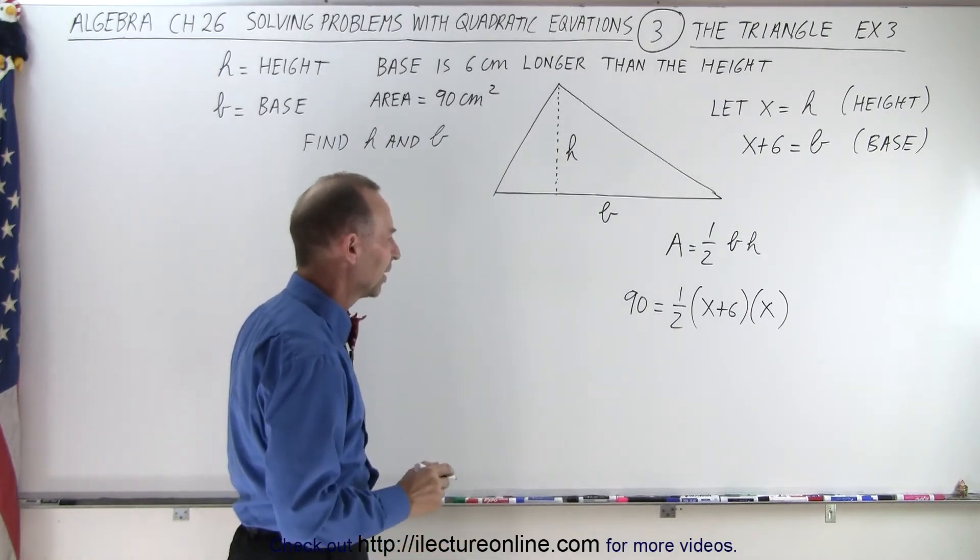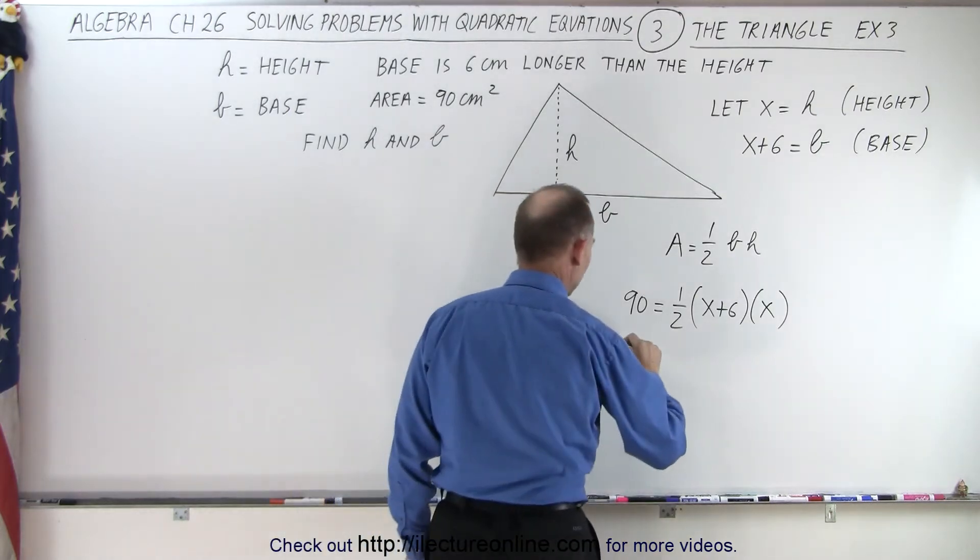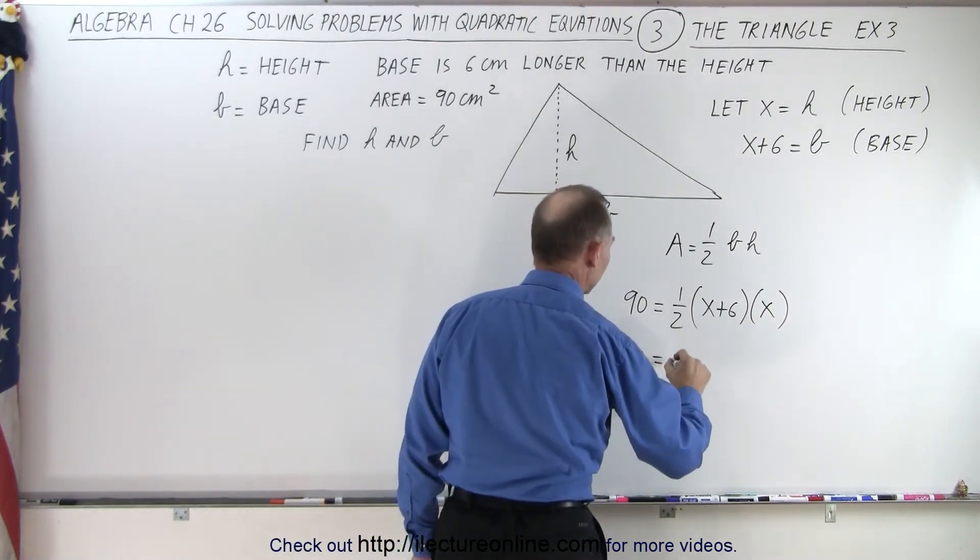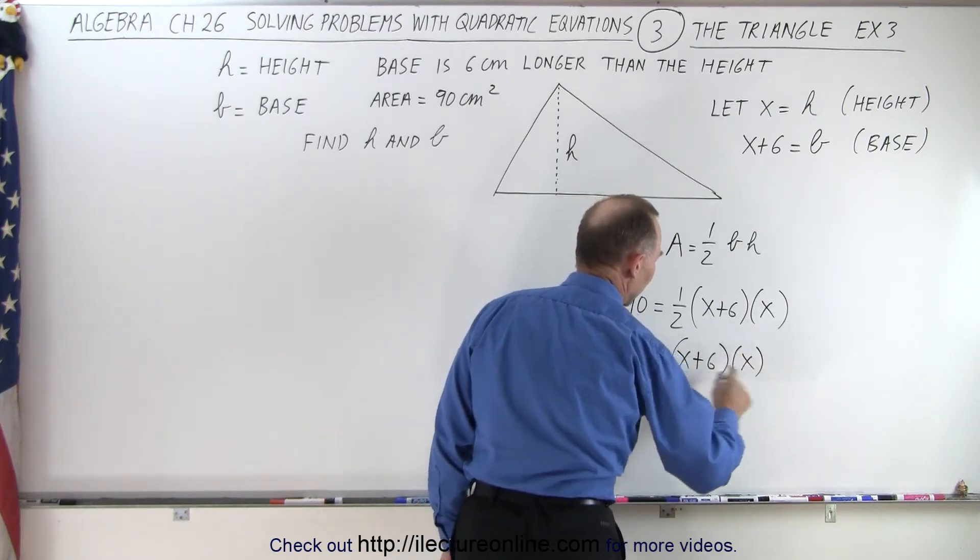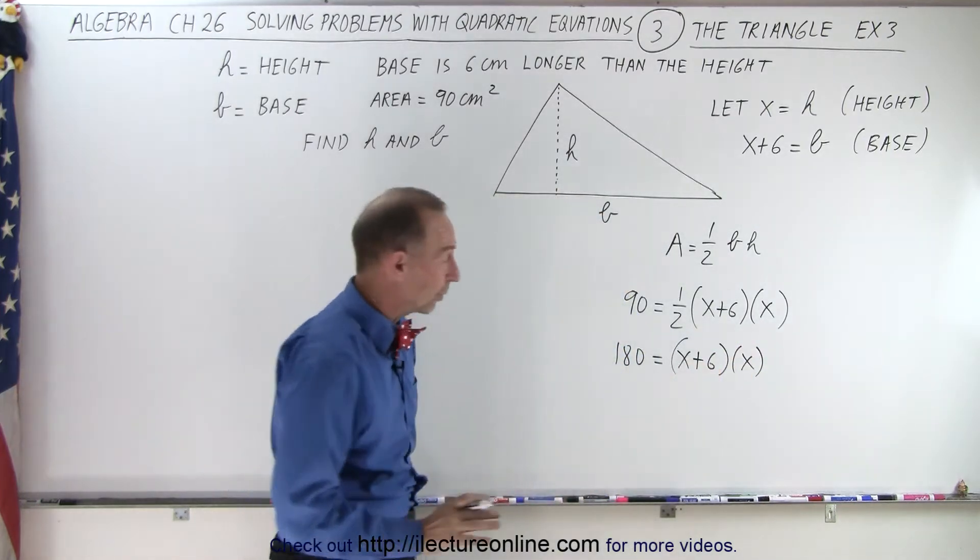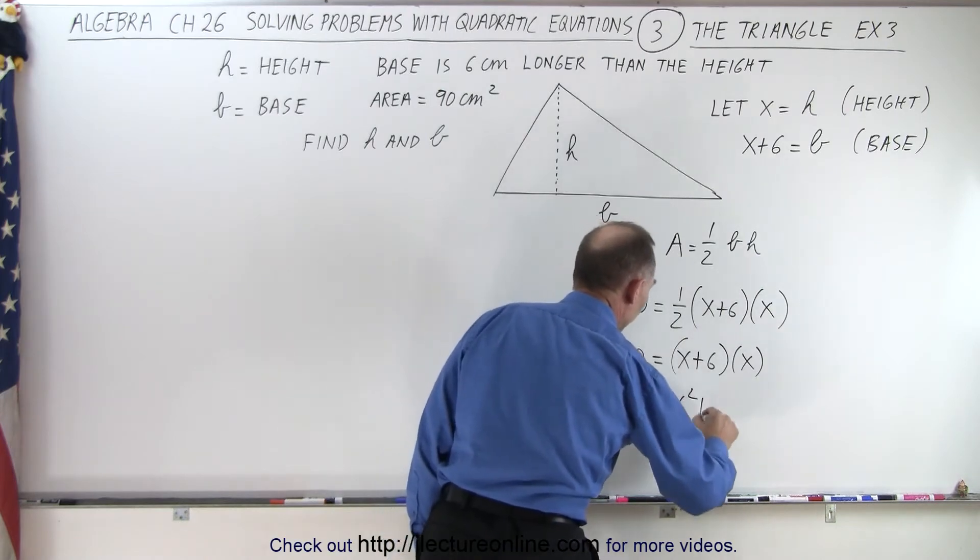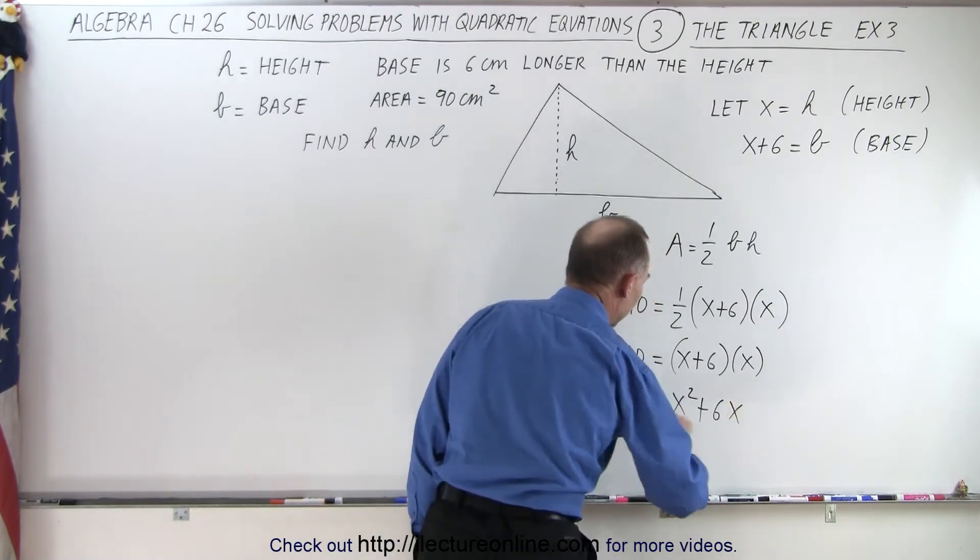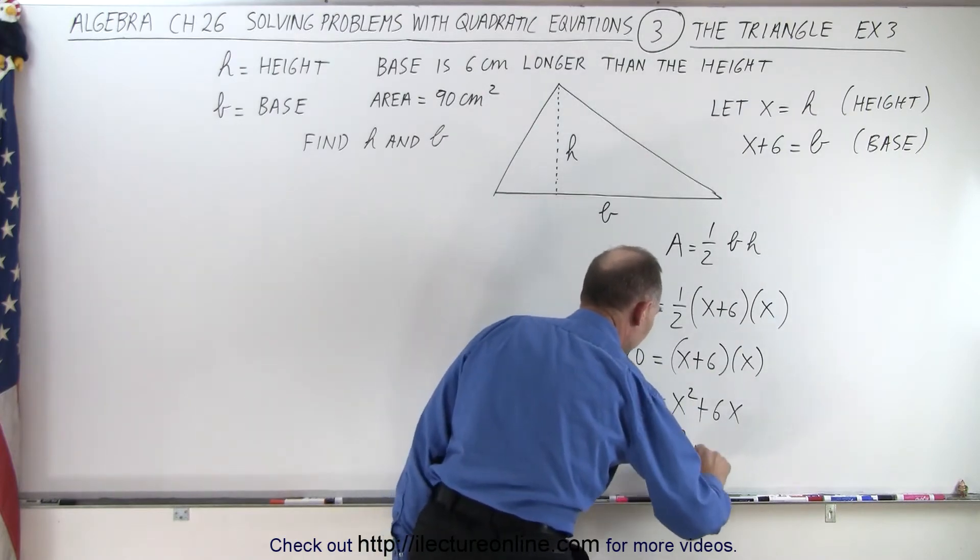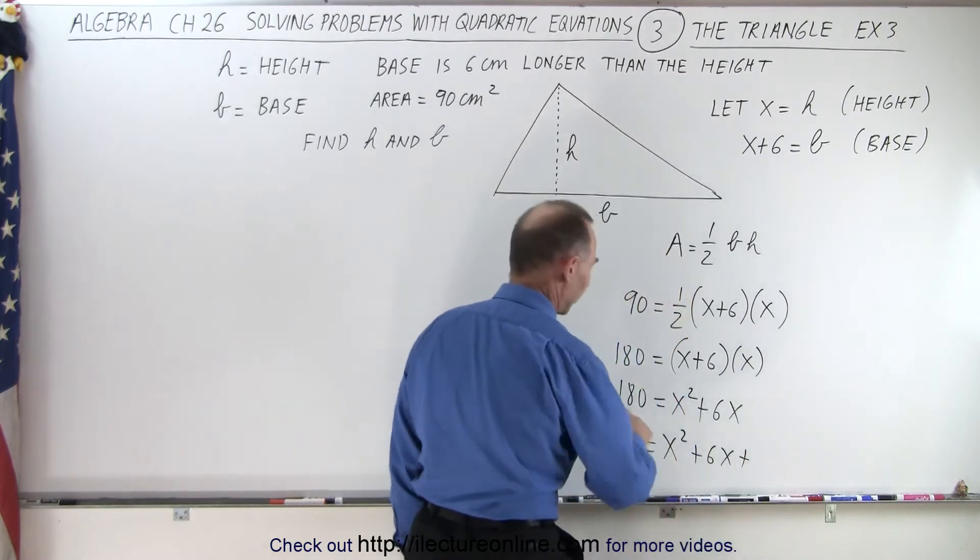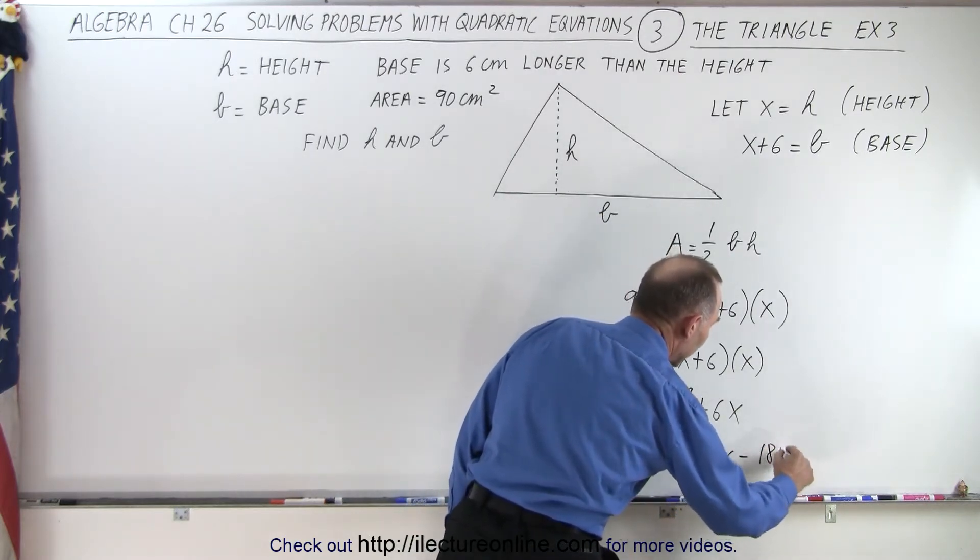First, let's get rid of one-half. We're going to multiply both sides by 2. That means we get 180 is equal to x plus 6 times x. Now we can multiply what's on the right side, so we have 180 is equal to x squared plus 6x. Finally, we can bring 180 across, so 0 is equal to x squared plus 6x minus 180.